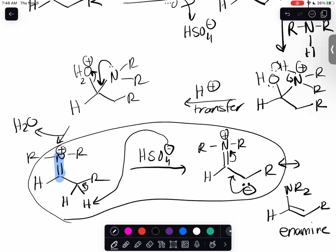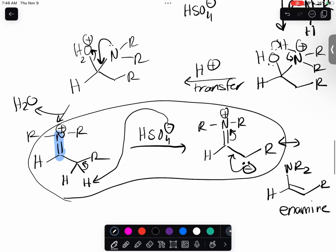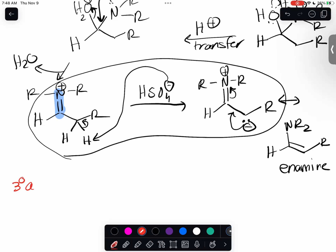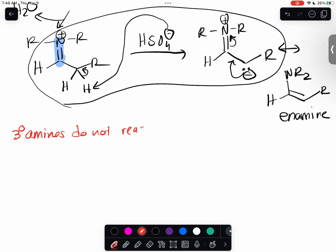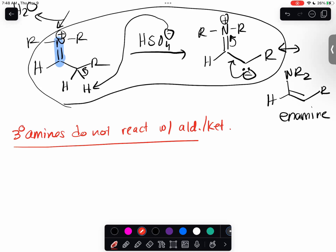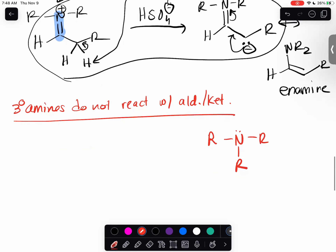Not surprisingly, tertiary amines do not react with aldehydes and ketones because there's no hydrogen on them. Tertiary amines do not react with aldehydes and ketones - there's no proton on the nitrogen, only R groups. If the nitrogen does react, it'll always be positively charged - there's no way to neutralize that molecule.